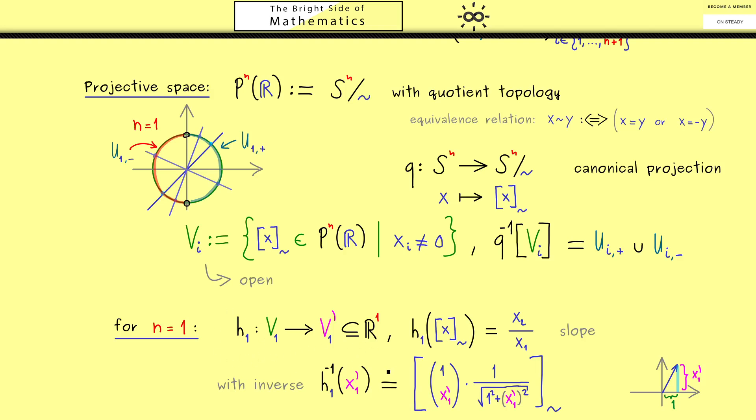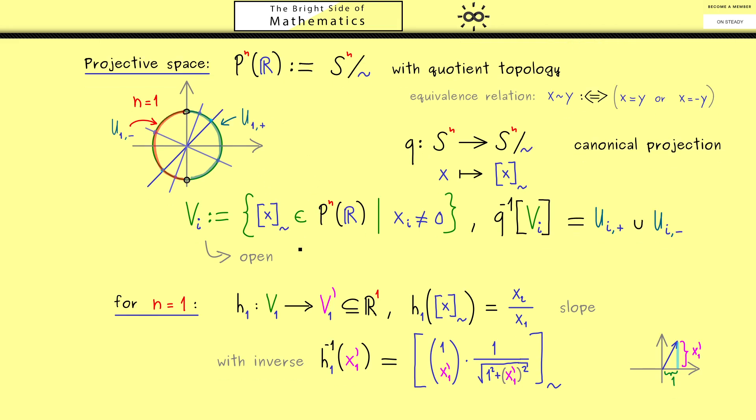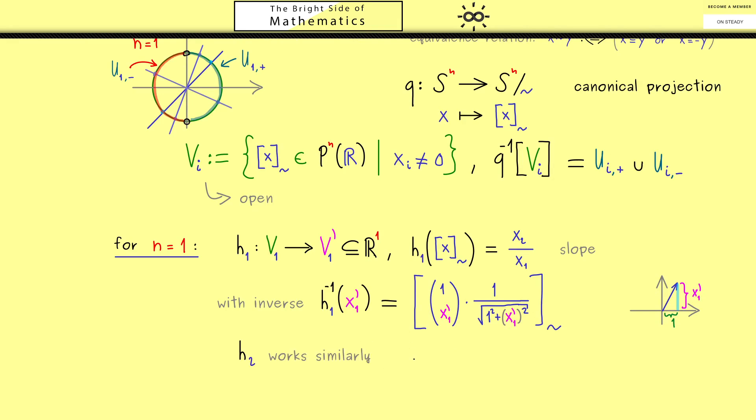In fact you see V_1' is exactly R^1. And now in a similar way we are able to define h_2. Indeed we just have to exchange the roles of x_2 and x_1. And then we see we also get a homeomorphism. In other words, this then shows that the projective space P^1(R) is locally Euclidean. And in combination that we already know that the projective space is a Hausdorff space and also second countable, we have a one-dimensional manifold. So you see this is our first abstract example of a manifold.